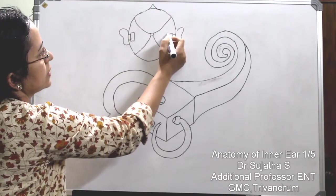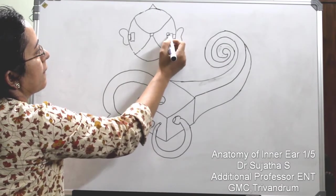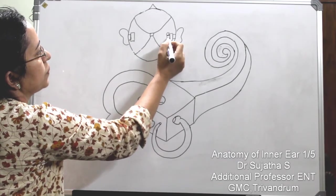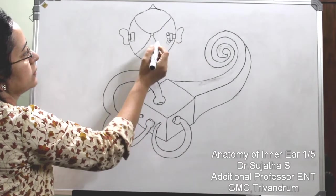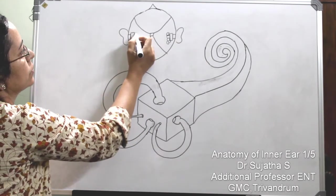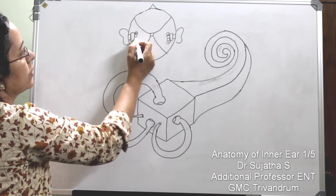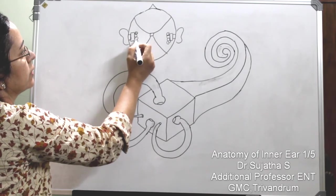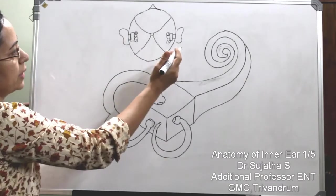Anteriorly there is the cochlea, then your vestibule, and semicircular canals — the superior, the posterior, and the lateral. And on the other side also: your cochlea, your vestibule, and your superior, posterior, and lateral semicircular canal. So on the right side.